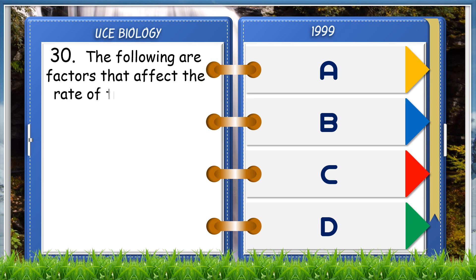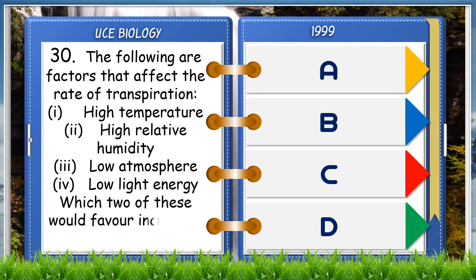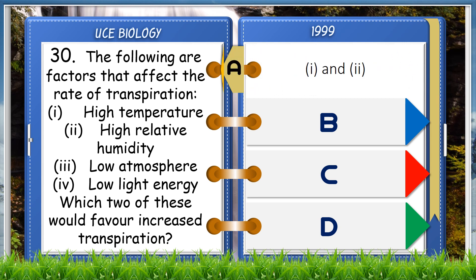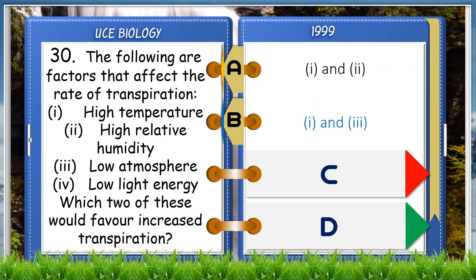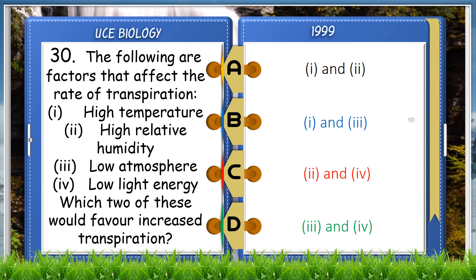The following are factors that affect the rate of transpiration: 1. High temperature, 2. High relative humidity, 3. Low atmospheric pressure, 4. Low light energy. Which two of these would favour increased transpiration? A. 1 and 2, B. 1 and 3, C. 2 and 4, D. 3 and 4. The answer is 1 and 3.